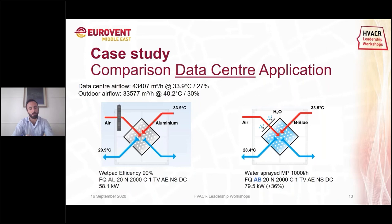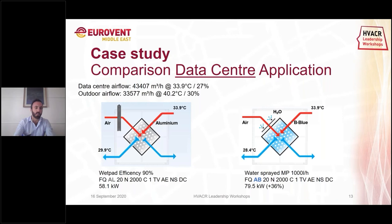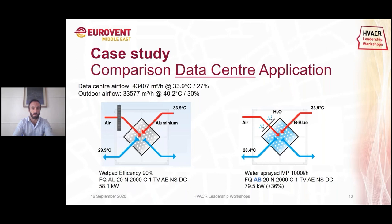We will now go through two case studies that are quite different from each other: the data center application, which is an industrial application, and the hospital application. These two are quite different. In the data center application, the system is a closed loop — the air of the data center circulates in a closed loop using always the same air — while the air that is wetted is the outdoor air, which we take from outside, cool, humidify, and then exhaust. It is important to keep the data center system tight and closed.